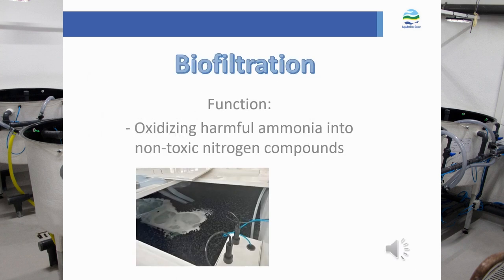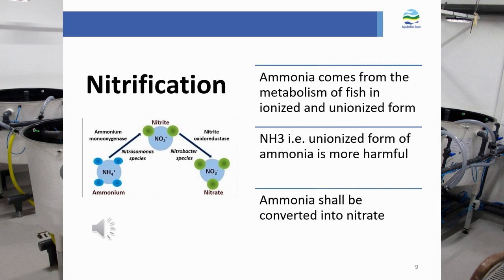Another main process in RAS water filtration is biofiltration. Harmful ammonia accumulates in the tanks via fish metabolism, and biofiltration is an important step to oxidize harmful ammonia into non-toxic nitrogen compounds. One of the most common ways to remove ammonia is through nitrification.